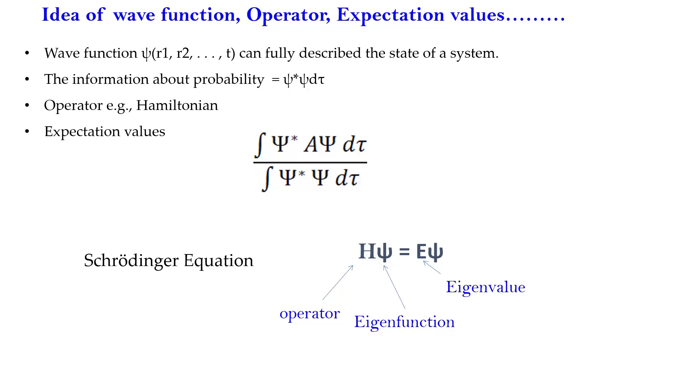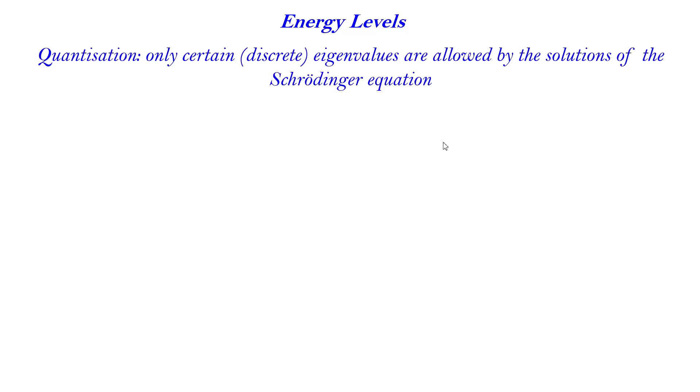What we have done is we have taken so many model systems. These are all model systems, not the real systems, and these model systems can explain some real-world phenomena. We get the idea of quantization from here, that only certain discrete energy eigenvalues are allowed by the solutions of the Schrödinger equation. If you treat the wave functions, you will get certain discrete energy levels, not continuous. Any of the values cannot be possible. We have solved many of the model systems.